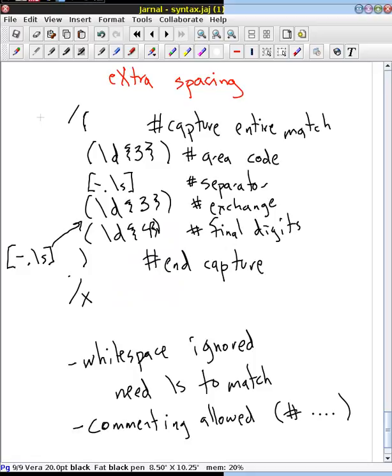So we know that we want the whole phone number, we want the area code, we have some sort of separator, the exchange, another separator, the final digits. And it's completely returnable.